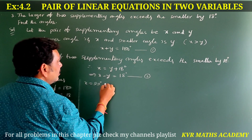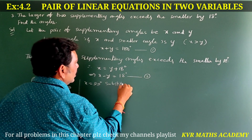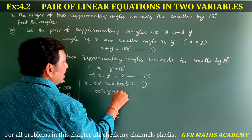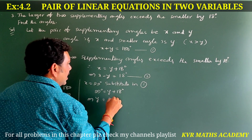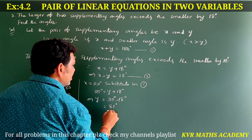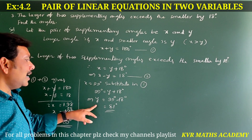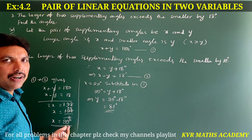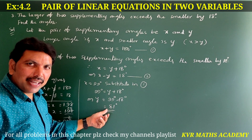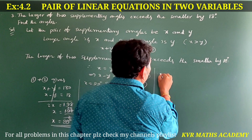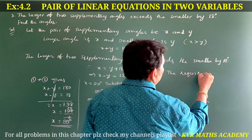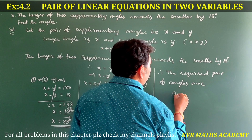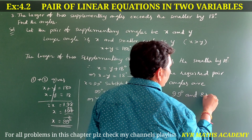Substituting x equal to 99 in equation number one: 99 equals y plus 18, so y equals 99 minus 18, which is 81 degrees. Therefore x equals 99 degrees and y equals 81 degrees. If you add 18 to 81, you get 99 — it exceeds by 18 degrees. The required pair of angles: largest is 99 degrees and smallest is 81 degrees.